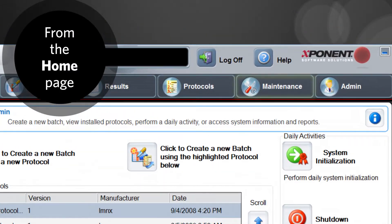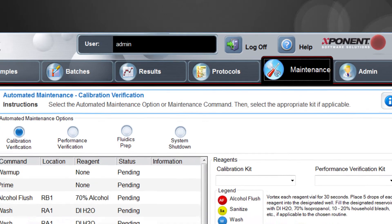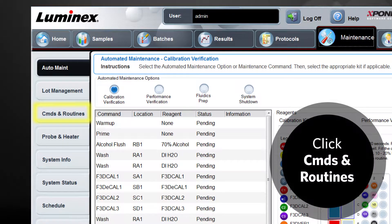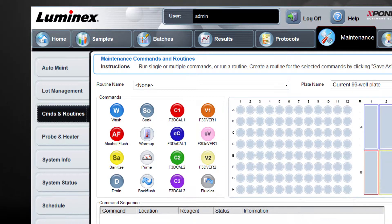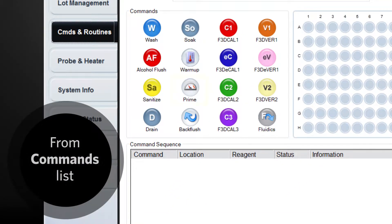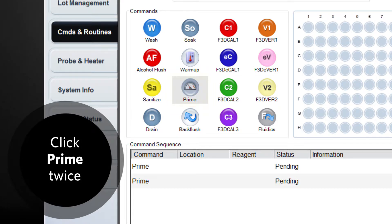From the home page, click the maintenance tab. On the maintenance tab, click Commands and Routines. From the commands list, click on Prime twice to add it to the command sequence.